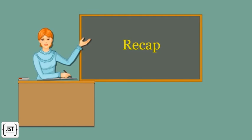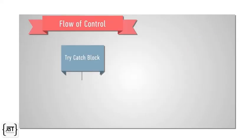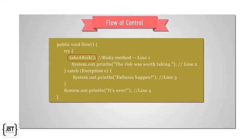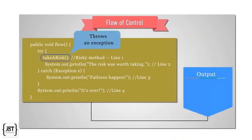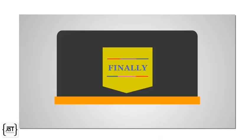In this video, we saw the flow of control of try catch and finally block. In case there is no exception, code in the catch block does not run. In case of exception, catch block runs, then the method continues on. Finally is for the things that we want to do no matter what.